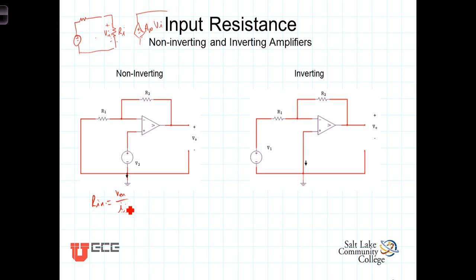In this case, V2 is our input source, our signal, and we haven't shown a resistance, but there could very well be, in all likelihood there is a source resistance associated with it.